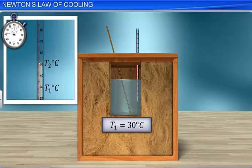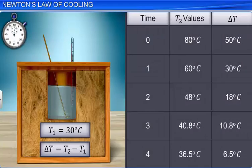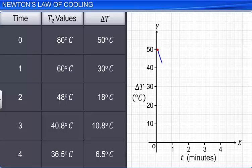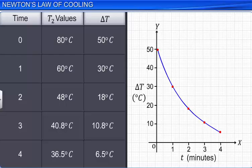The difference in temperature between the water and its surroundings is expressed as delta T, which is equal to T2 minus T1. Delta T can be computed for each value of T2. When a graph is plotted by taking delta T along the y-axis and time T along the x-axis, we get a curve. The graph indicates that the cooling of water depends on the temperature difference between the water and its surroundings. The greater the temperature difference, the greater the fall in temperature of the hot water with the passage of time. As time passes, the temperature difference decreases, and hence the change in temperature also decreases.